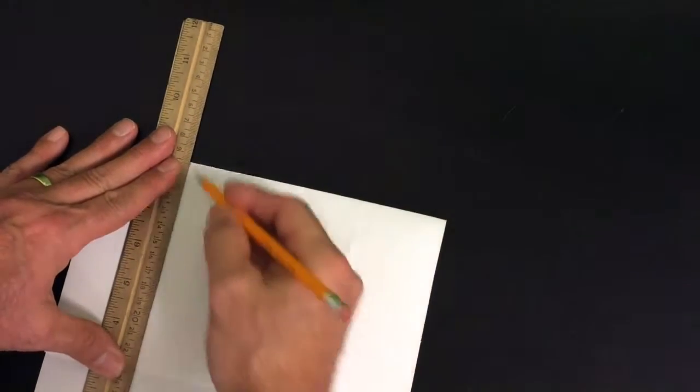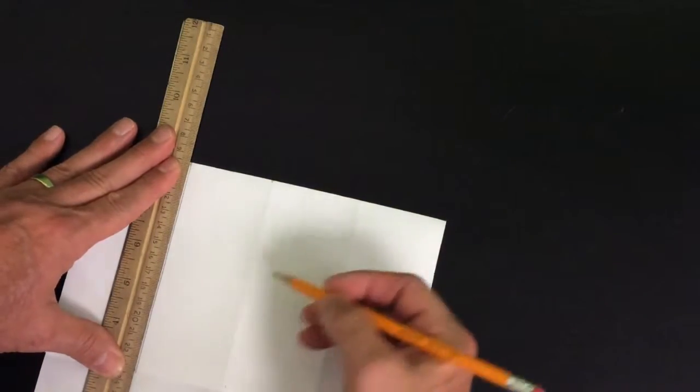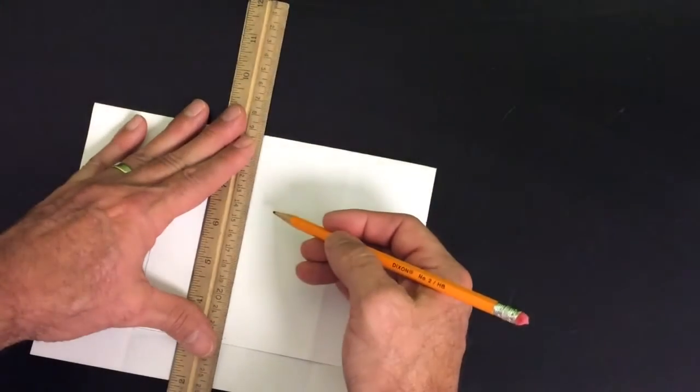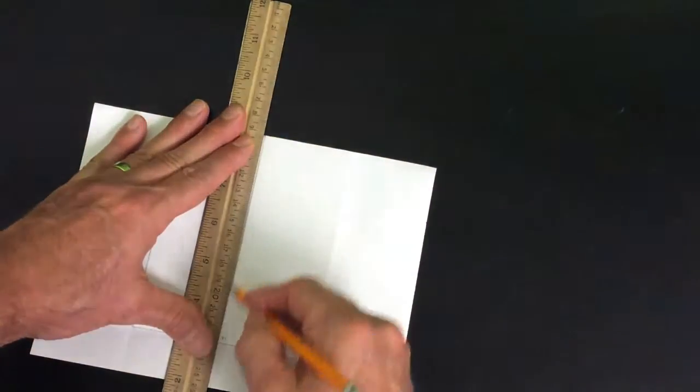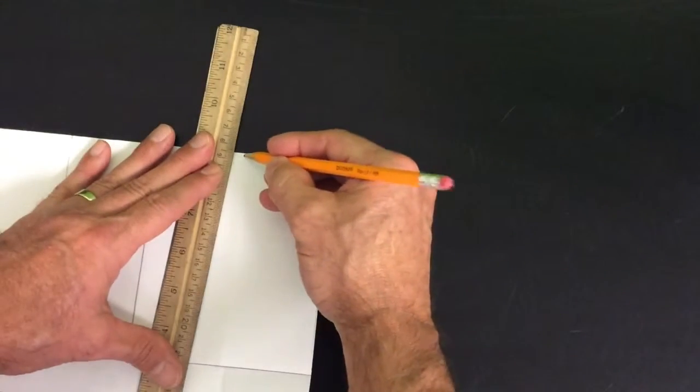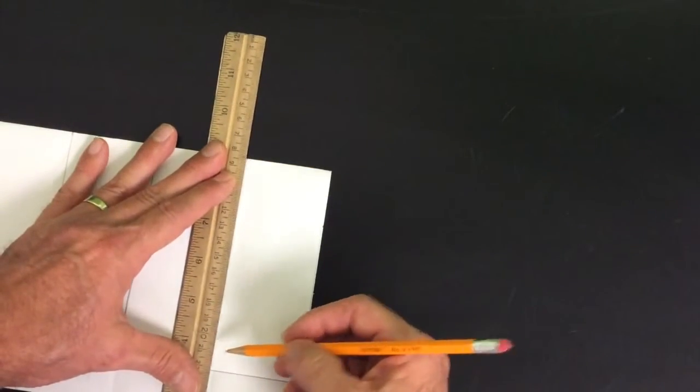And then you can mark this one and make that line a little bit more. Make sure you're accurate in your lines. And then finally, if you mark where that is and that is, and then make that align.